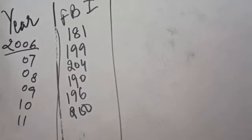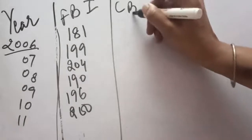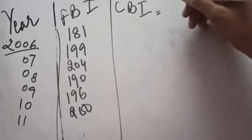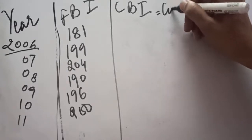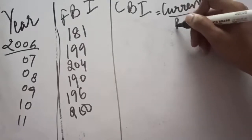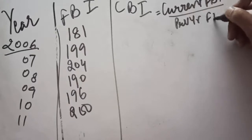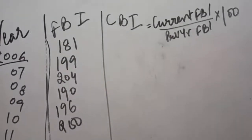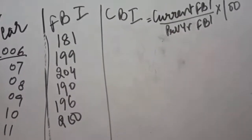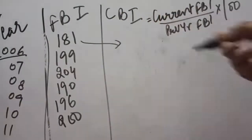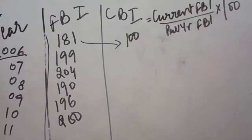This is the question in which you have been given FBI and in the question it has been written that you have to convert it into CBI. The formula is: current year FBI divided by previous year FBI multiplied by 100. For the first year, current year FBI we are having but previous year FBI we are not having, so the first year we can assume to be 100.